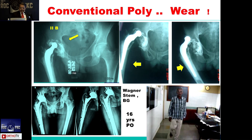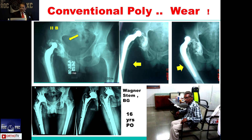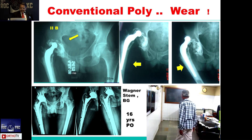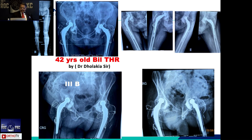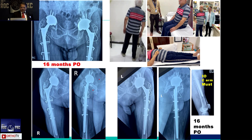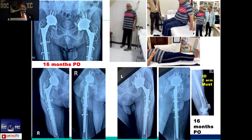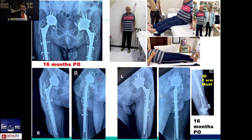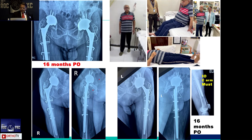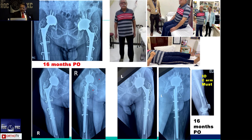The ETO union rate is almost 99%. One case example: a 42-year-old with bilateral total hip replacement done by Professor Dolakya had bilateral poly wear and severe bone loss. Everything was reconstructed with a large-size cup, and at 16-year follow-up the patient has good mobility, stability, and the ETO is united.